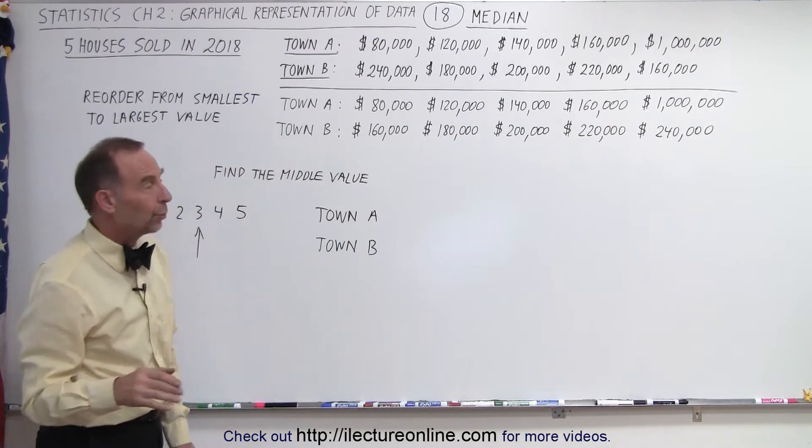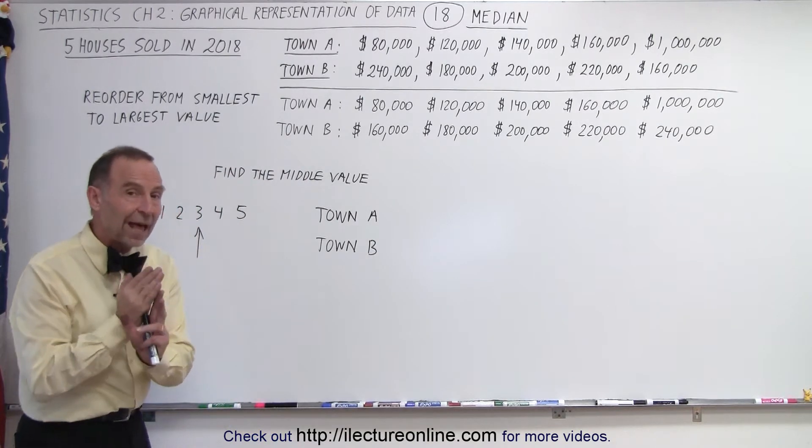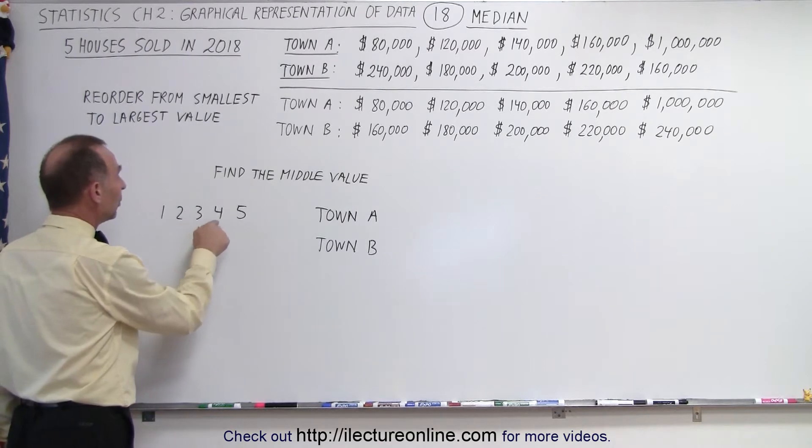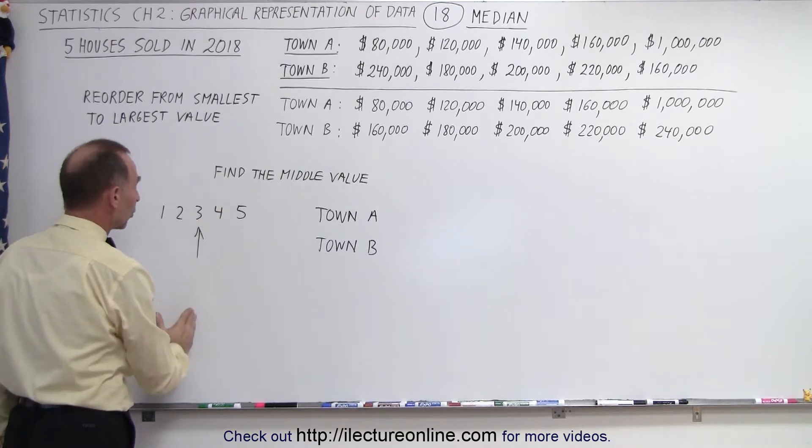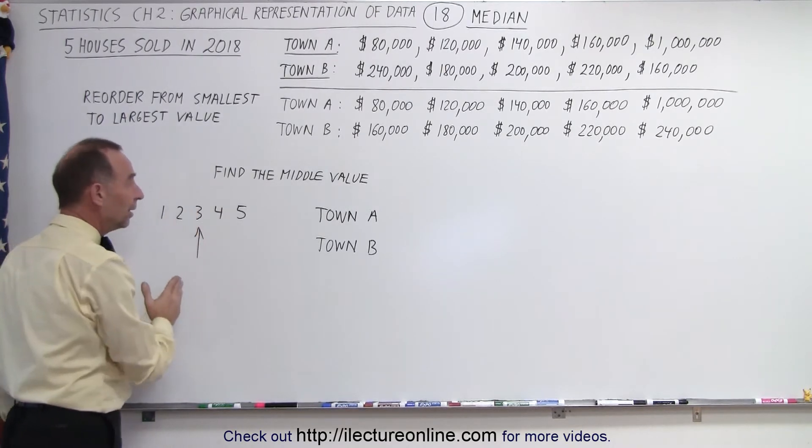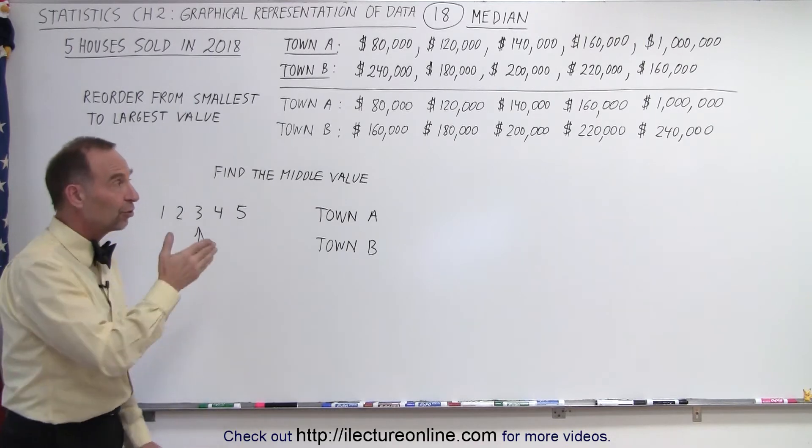To find the median we're essentially finding the middle value. So in each case there are five data points, five data values, and we're going to find the middle one once we've lined them up from smallest to largest.